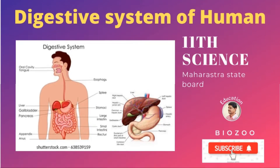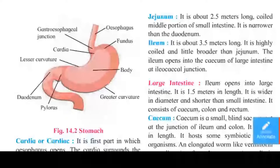Today we are going to learn about the Alimentary Canal. Starting with the mouth, called the buccal cavity, then the teeth, tongue, esophagus, and then the stomach — which includes the cardiac stomach and the pyloric stomach. Then we will learn about the next part, which is the small intestine.